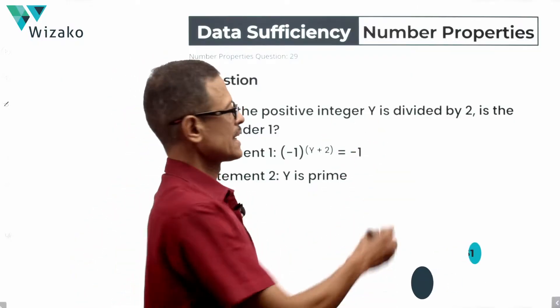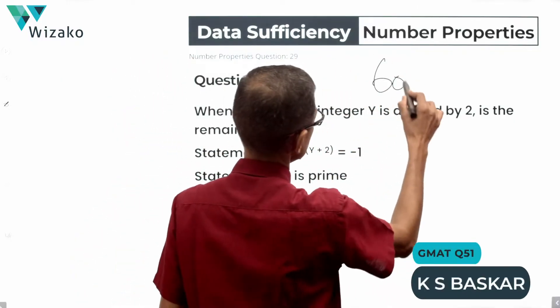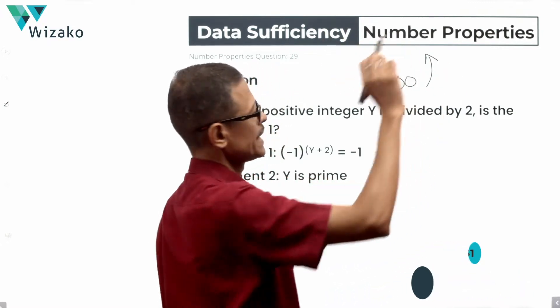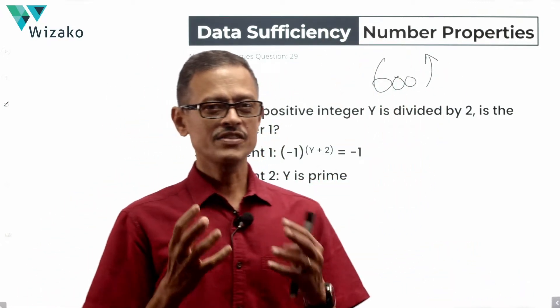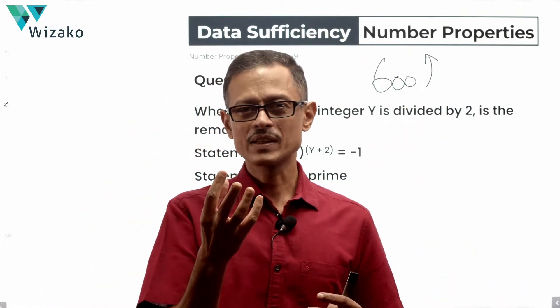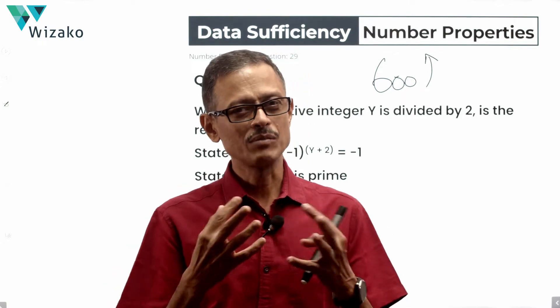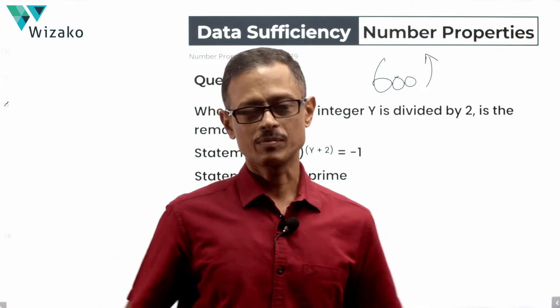This is an easy question. I'll classify the question as a GMAT 600 level data sufficiency question in number properties. This data sufficiency question essentially deals with properties of odd numbers, even numbers, and primes. Very straightforward concept.